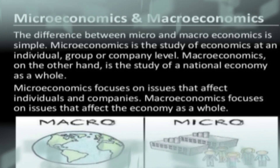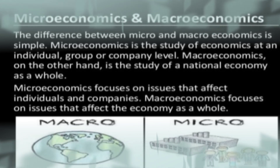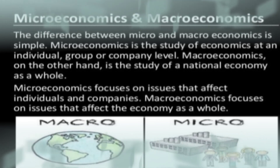Macroeconomics deals with the whole economy — for example, national income, which is the income of all people in a country. It is not one individual's income; it is an aggregate income expressed in the money value of goods and services. Macroeconomics covers aggregate total demand, total supply, and price level. Microeconomics is the base for macroeconomics.